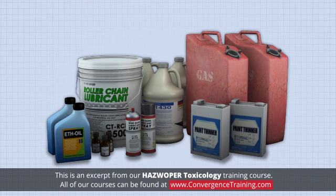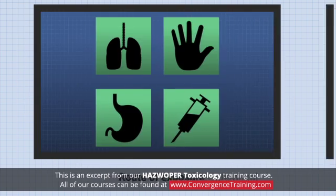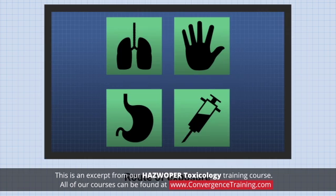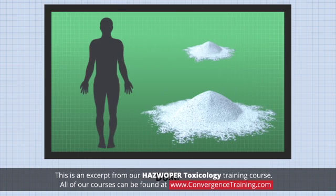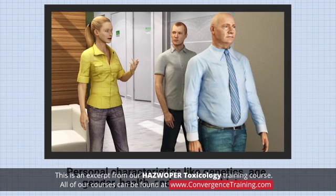The toxicity of a hazardous chemical depends on many factors including the physical form of the chemical, the route of exposure, the dose, and personal characteristics like genetics, age, gender, health, and exposure history.